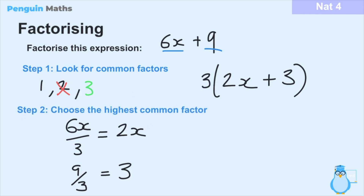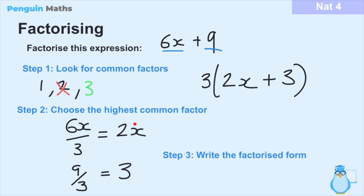To summarise the steps: Step 1 — look for common factors of the expression. Step 2 — choose the highest common factor; in this case the highest common factor between 6x and 9 is 3. Then divide each part of the expression by the common factor: 6x divided by 3 gives 2x, and 9 divided by 3 gives 3. Step 3 — write it in factorised form with the common factor outside the bracket and the two parts inside.